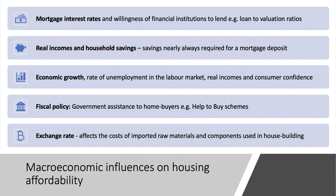Many people are having to rely on the bank of mum and dad to get on the housing ladder. Another big macro factor is economic growth and the rate of unemployment in the labour market. In theory, growth creates more incomes and more people in work, improving affordability — but if demand for housing grows, it forces prices up and can offset that benefit.